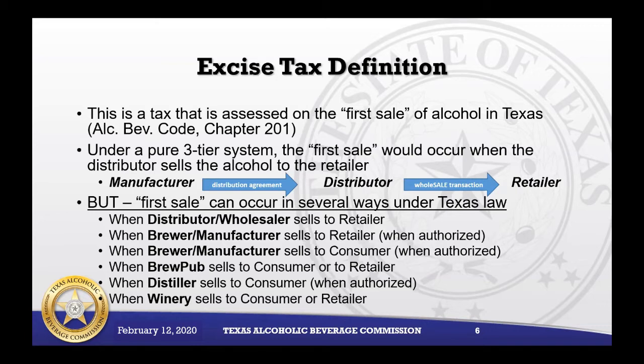The first sale can occur in several ways under Texas law: when the distributor or wholesaler sells to a retailer; when the brewer or manufacturer sells to retailers when authorized; when the brewer or manufacturer sells to the consumer when authorized; when the brewpub sells to consumer or to retailers; when the distributor sells to the consumer when authorized; and when wineries sell to consumers or retailers.